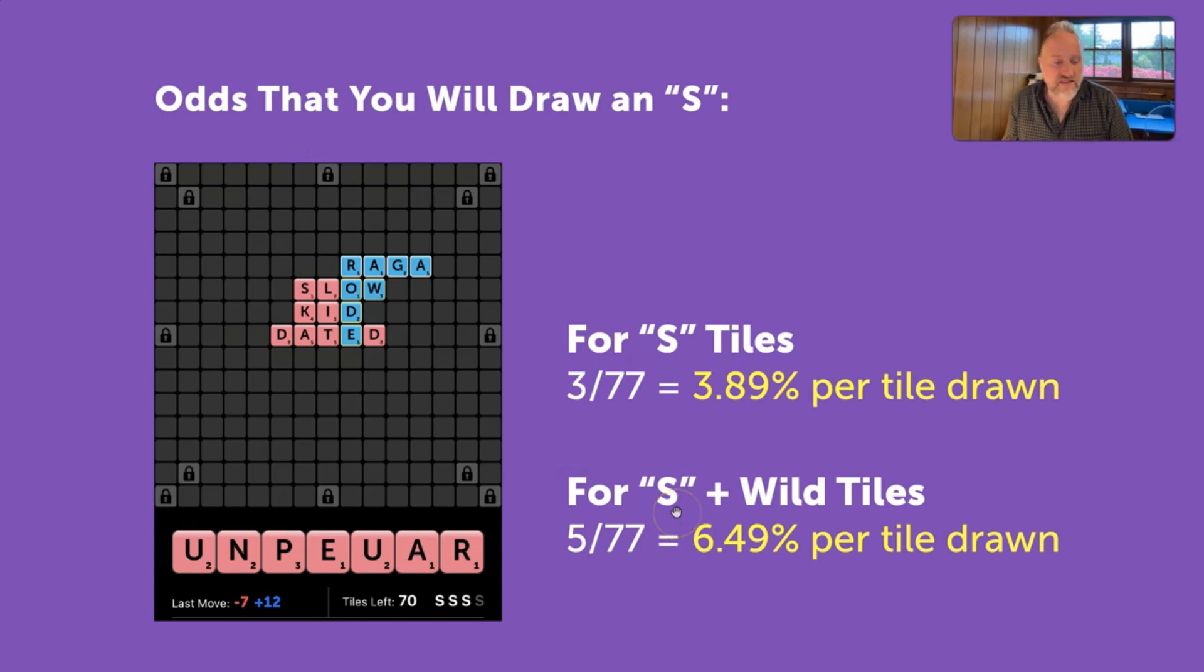I will say that like how the probability that your opponent has an S goes up as the game goes on, this number would go down as the game goes on. Because, even though it's the 3 out of 77 thing, the odds that one of those three is in your opponent's hand increases. And therefore, this decreases.